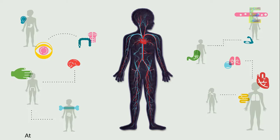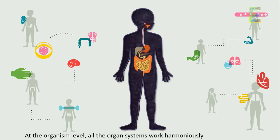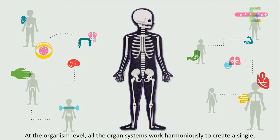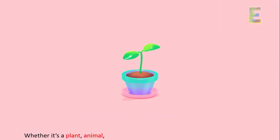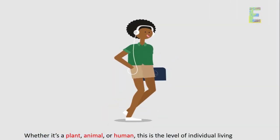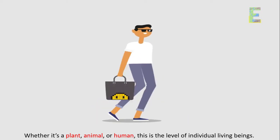The organism level. At the organism level, all the organ systems work harmoniously to create a single, functioning organism. Whether it's a plant, animal, or human, this is the level of individual living beings.